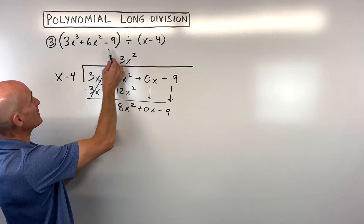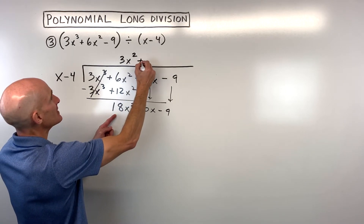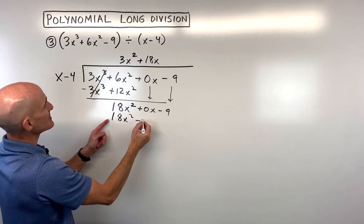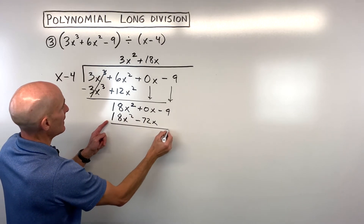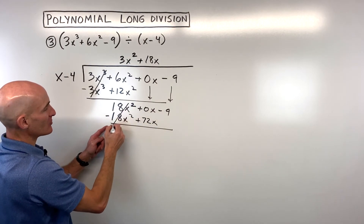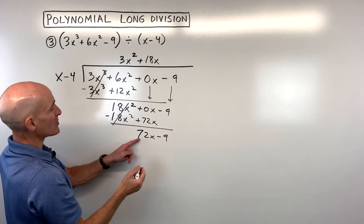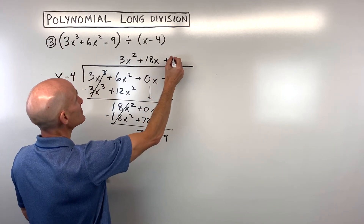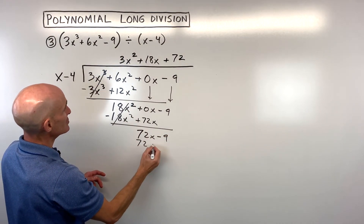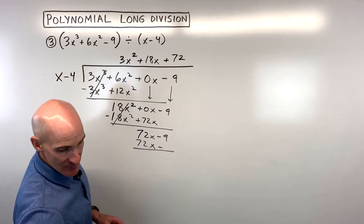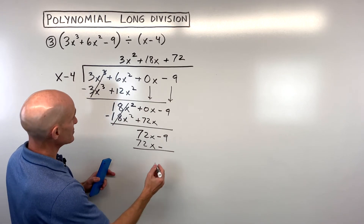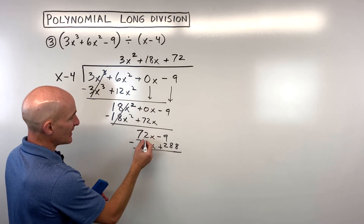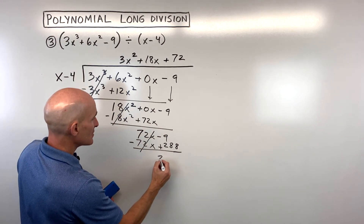Now we're trying to get 18x squared. What times x equals 18x squared? That's going to be 18x. When we distribute, we get 18x squared minus 72x. We change the signs and add — the first terms cancel — and now we're trying to get 72x. What times x equals 72x? That's 72. Distributing gives us 72x minus 288. We change the signs and add — those first terms cancel — and we're left with 279.